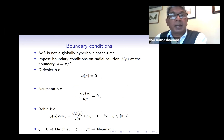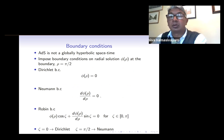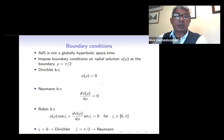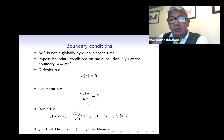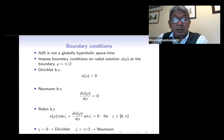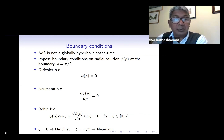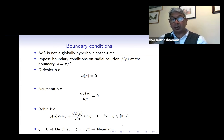As anti-de Sitter space is not a globally hyperbolic spacetime, we have to impose boundary conditions on the radial solution at the spacetime boundary at rho equals pi over two. The commonest boundary conditions are Dirichlet, where the value of the field vanishes at the boundary, and Neumann, where the derivative of the field vanishes at the boundary. We also consider Robin boundary conditions, which is a linear combination of Dirichlet and Neumann, parameterised by the Robin parameter zeta, which runs between zero and pi. When zeta is zero we recover the Dirichlet boundary condition and when zeta is pi over two we recover the Neumann boundary condition.